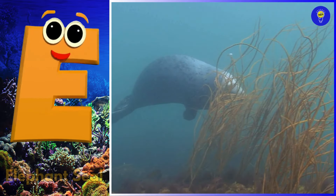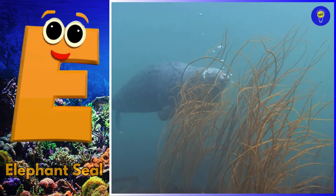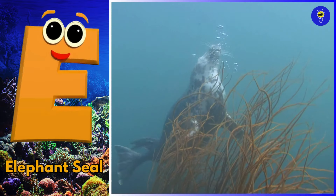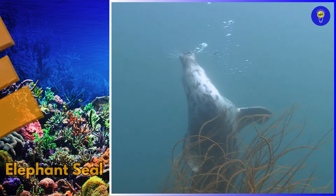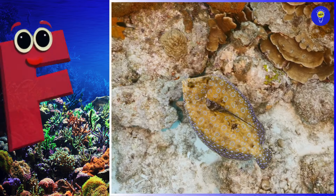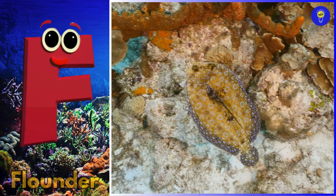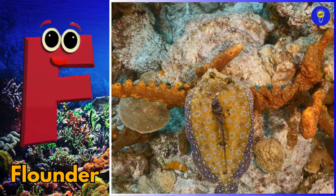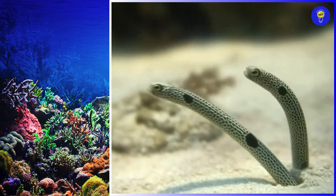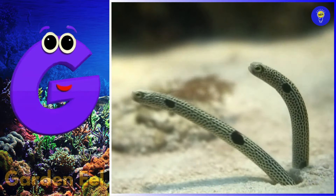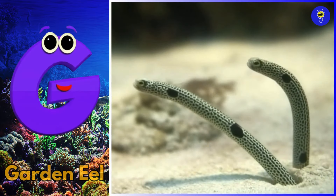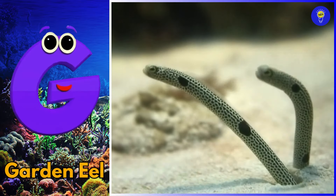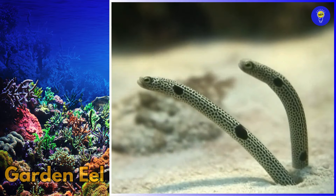E is for elephant seal. E, E, elephant seal. F is for flounder. F, F, flounder. G is for garden eel. G, G, garden eel.